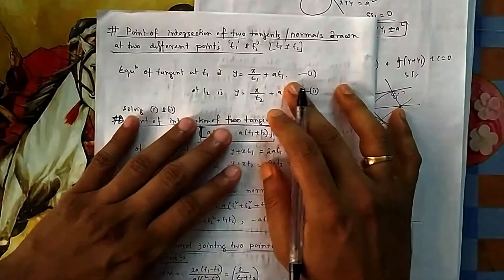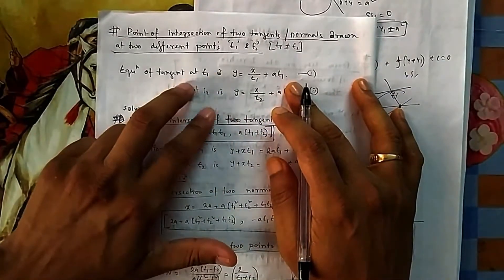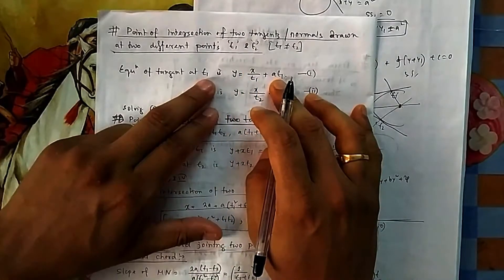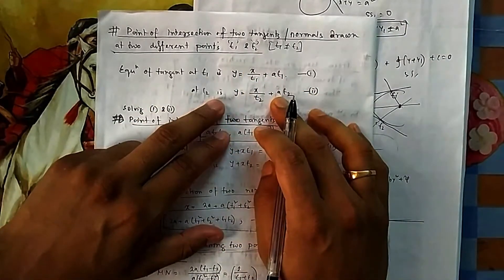Okay, what is the equation of t1? Now you know what was the equation of tangent at t: xy is equal to x by t plus a. So at t1 it will be this one, at t2 it will be this one.